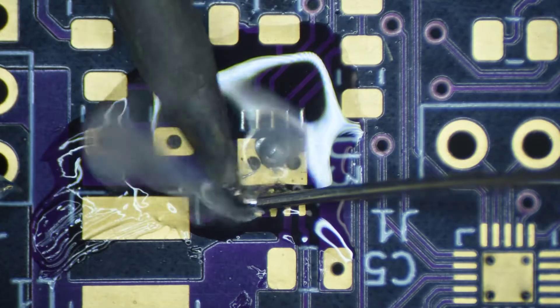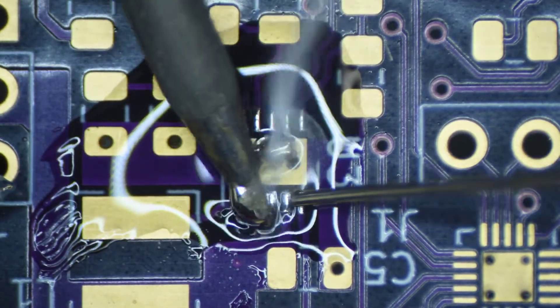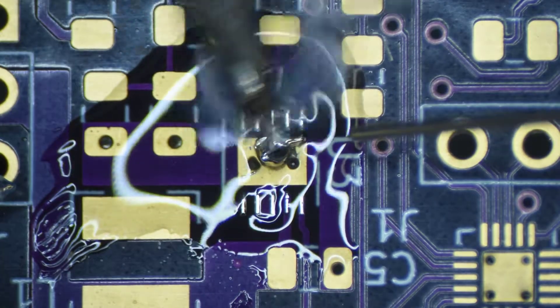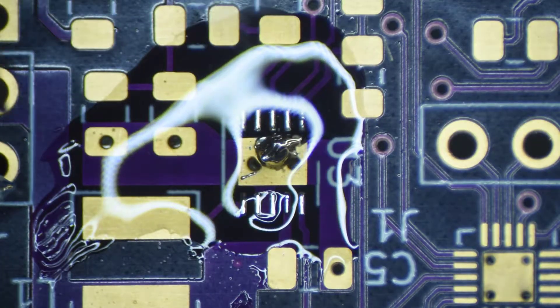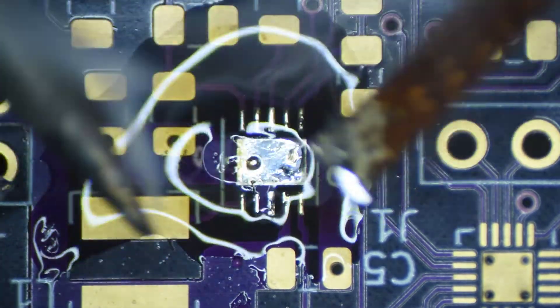So by the third board, I was starting to make some adjustments. I ran the air temperature at 850 degrees for all of these. The first two boards, I had the air volume at 15%. I moved that down to 10% for the last board, and I was happier with the lower airflow.